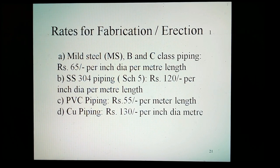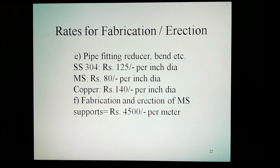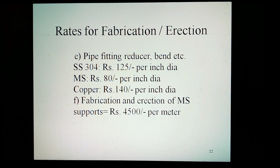Typical rates for fabrication, erection, and testing of pipelines for costing purposes. For example: MS piping — elbows at ₹45 per inch, erection at ₹[geo] per meter length; SS300 schedule piping — elbows at ₹90 per inch; PVC piping — ₹45 per meter length; copper piping — ₹100 per inch. Pipe fitting reducers: SS304 at ₹125 per inch, MS at ₹60 per inch, copper at ₹140 per inch. Fabrication and erection of MS supports equals approximately ₹4500 per MT.